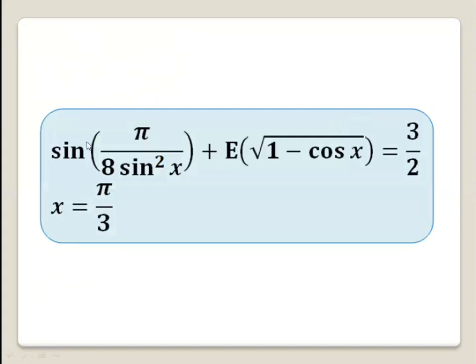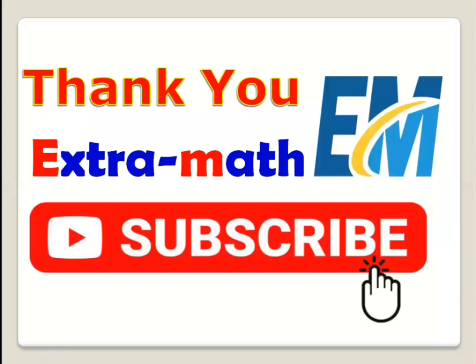Therefore, the solution of the equation — sine of pi over 8 sine squared x plus the integer part of square root of 1 minus cosine 2x equals 3 over 2 — is only x equals pi over 3 in the given interval. Thank you for watching.